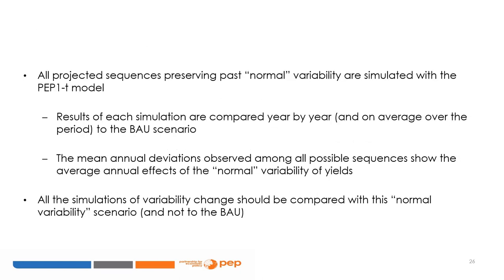Whichever approach is used, all projected future sequences preserving past variability have to be simulated with the PEP1T model, and the results must be compared to the BAU scenario. Year by year, mean results observed among all sequences show the average effect of a normal yield variability. Accordingly, these results can be used for defining a normal variability scenario that will be further considered as a baseline scenario for assessing the effects of a future changing variability.